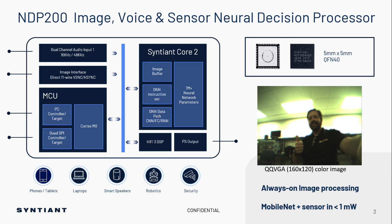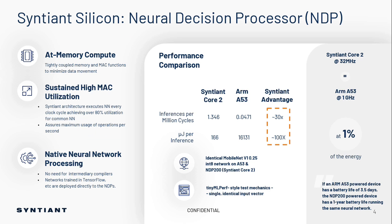Here's a picture of a QQVGA image captured directly from an image sensor, directly in our device without any other components in between. What we're doing is always-on image processing, and we can get this under a milliwatt for the solution.